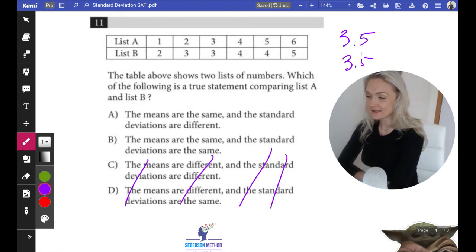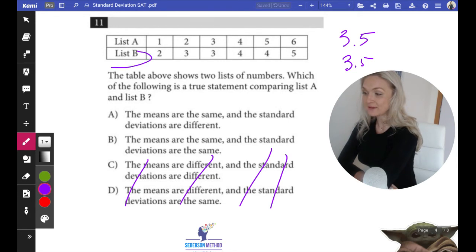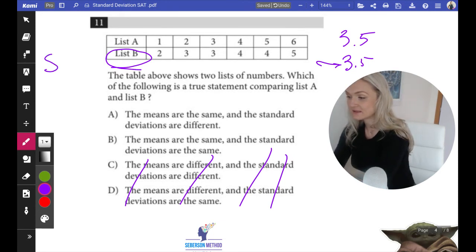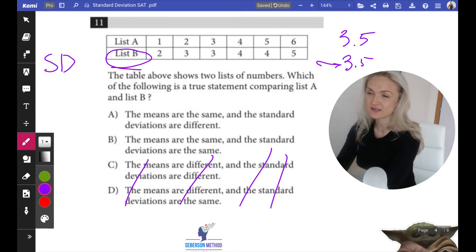So it looks like the numbers for list B are a lot closer to its mean of 3.5. So the standard deviation of list B, just SD—although the notation for standard deviation is sigma, we're just going to do SD—SD is going to be lower.